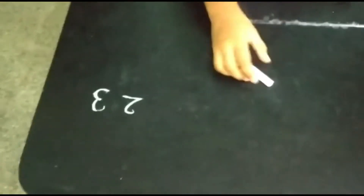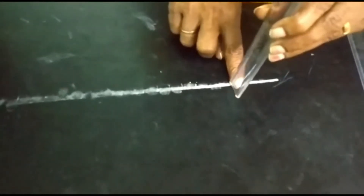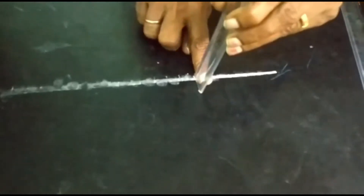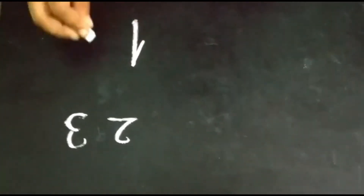Now my grandmother will measure the same line using her handspan. She counted 1, 2, 3... up to 16. My grandmother's handspan for the line was 16. My finger is small so I have to take more counts, but my grandmother's finger is very big so she has fewer counts.